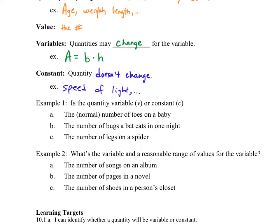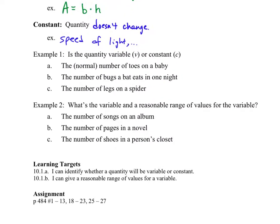So go through, we have example one, example two here. First of all, example one, just figure out, is the quantity going to be variable or constant? To save a little bit of writing, you can either just do a V or a C. So the normal number of toes on a baby, so if a baby's born normally, number of toes would be 10. So that should be constant, should always be the same.